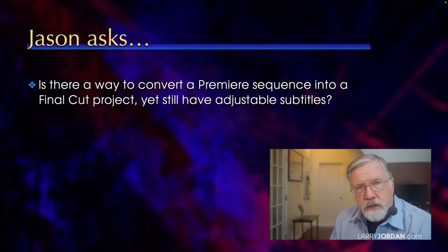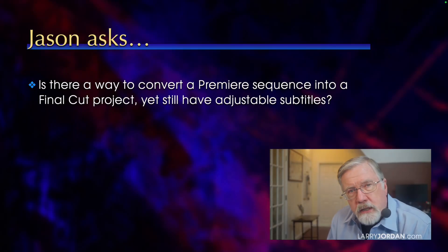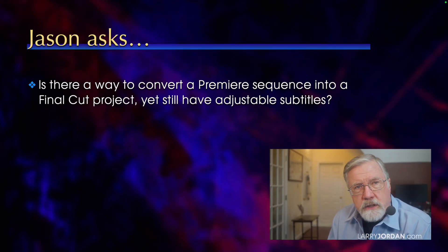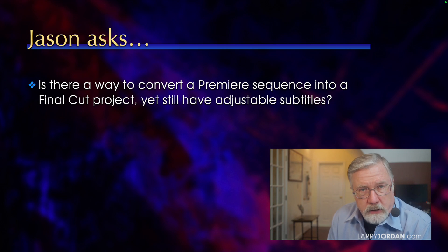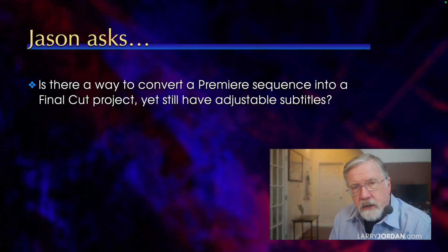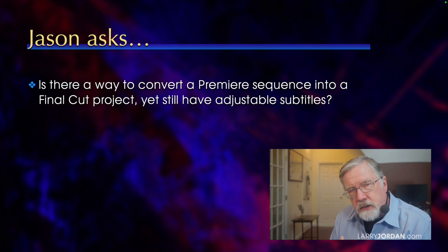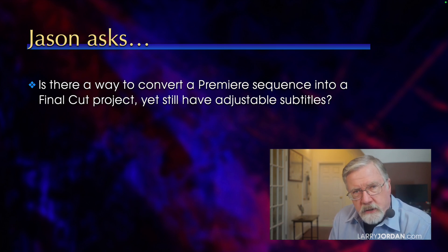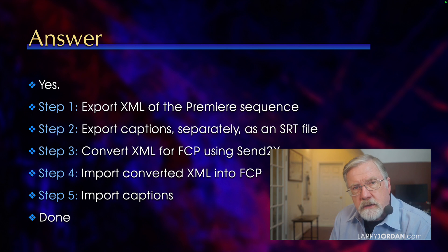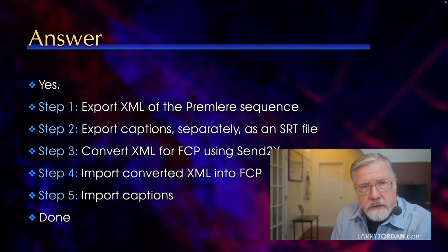Jason asks: is there a way to convert a Premiere sequence into a Final Cut project, yet still have adjustable subtitles? By adjustable, he means being able to change the duration, the location, or the content of a subtitle. The answer is yes, and here are the steps.